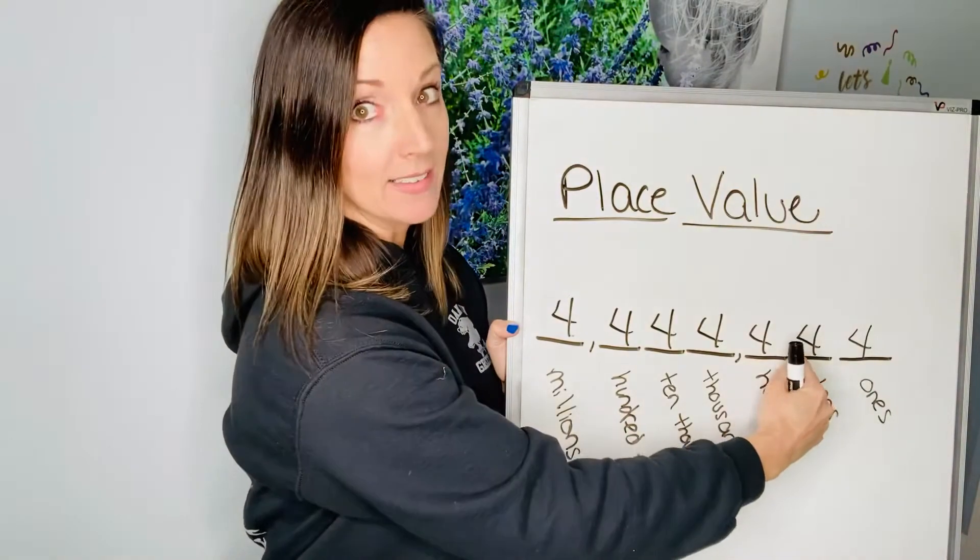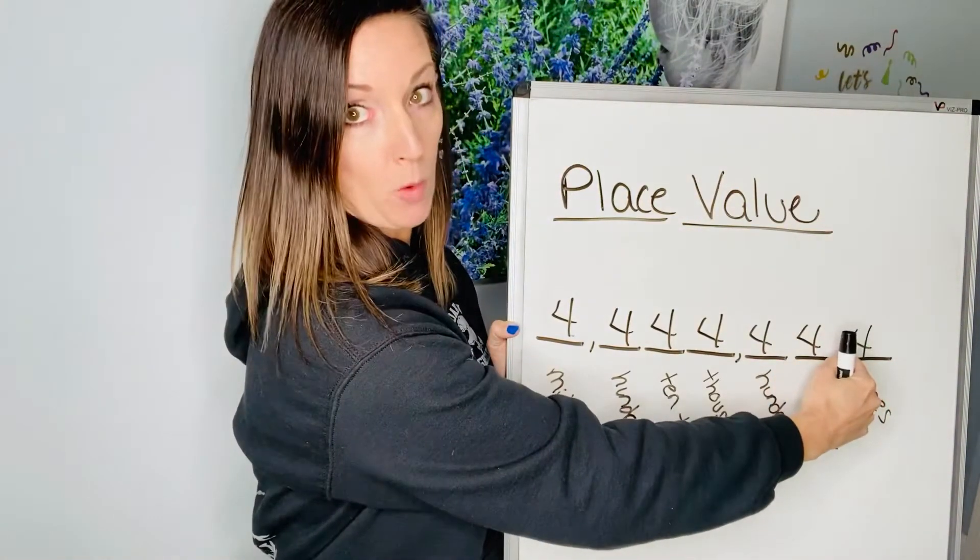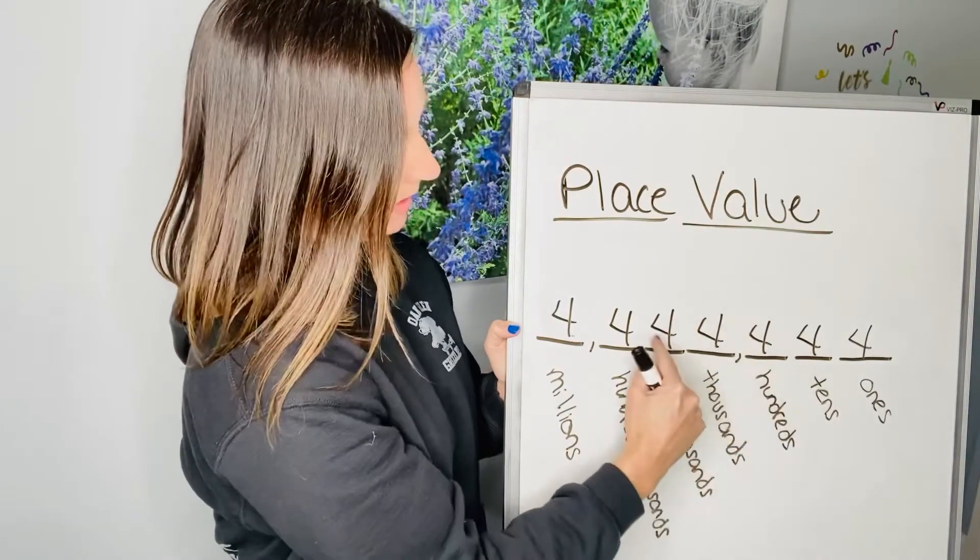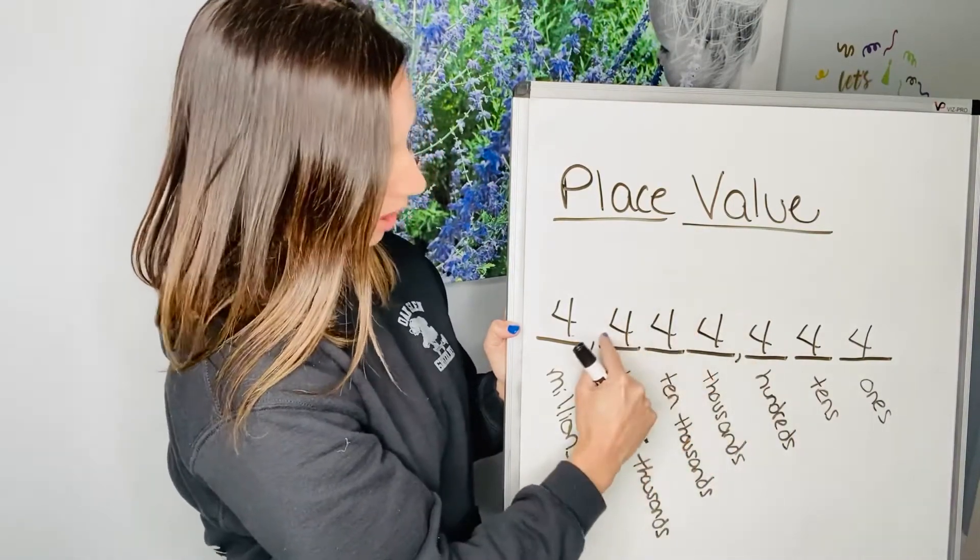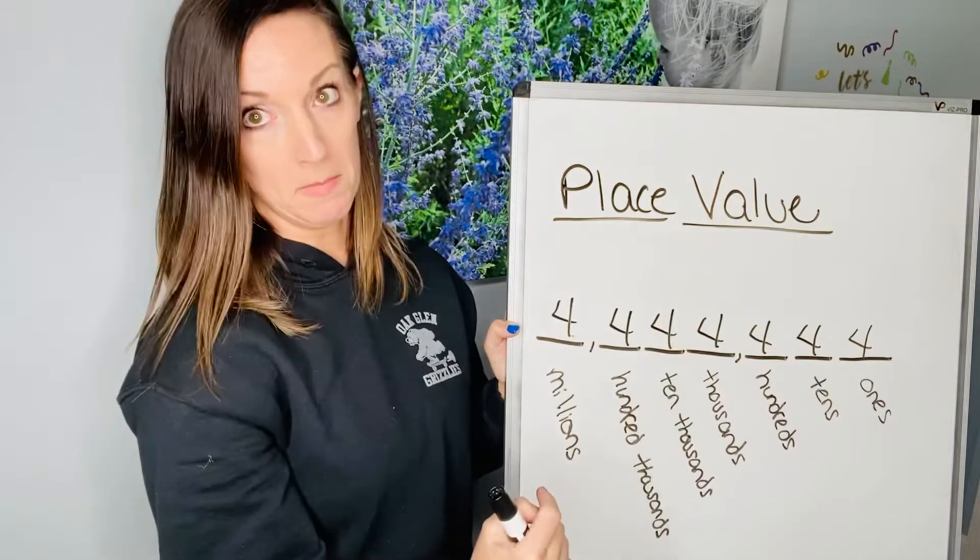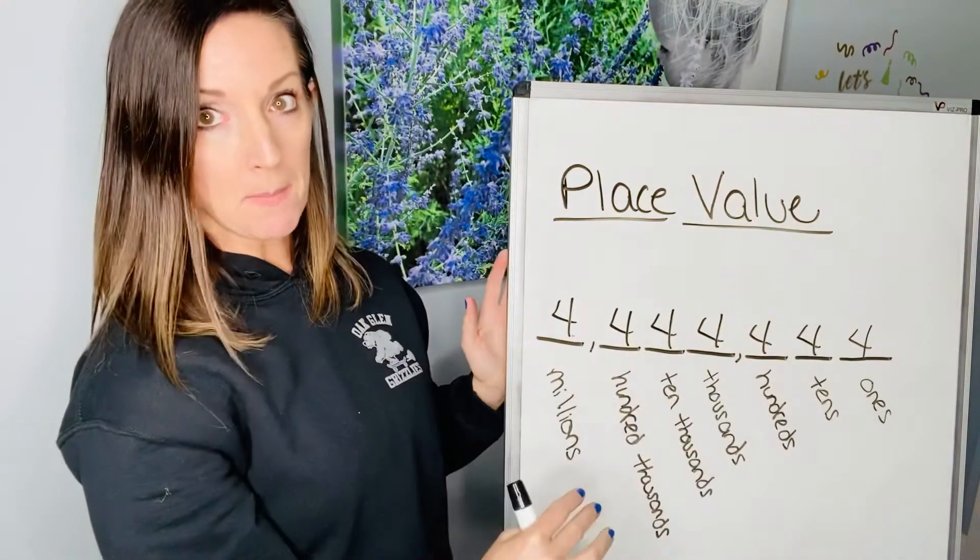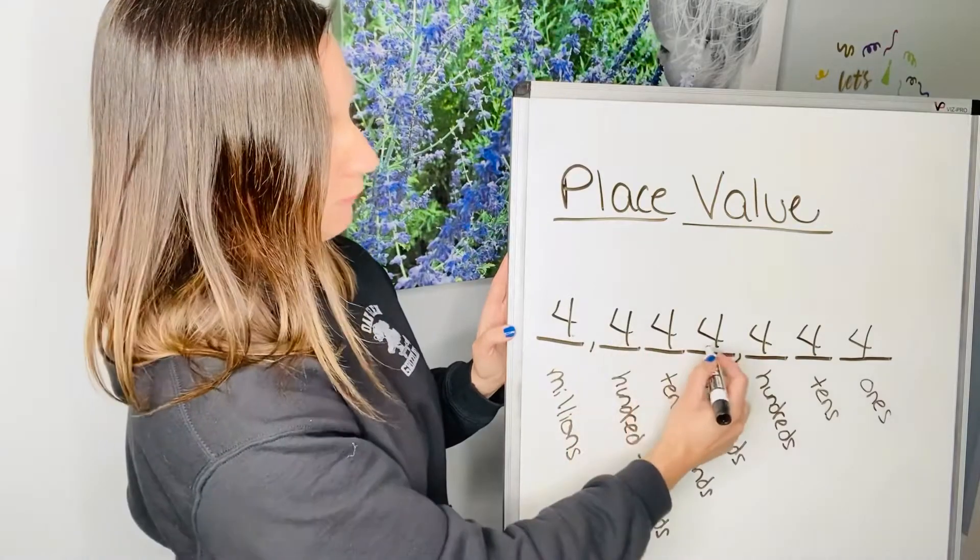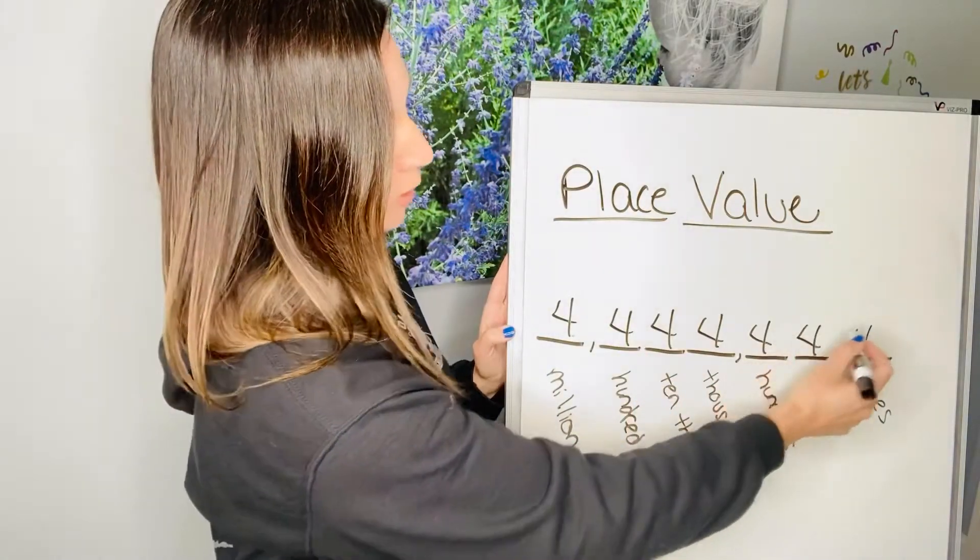Four tens is 40, bigger than four. Then we have four hundred, four thousand, forty thousand, four hundred thousand, and four million. So if you read this number, full number, it's four million, four hundred and forty-four thousand, four hundred forty-four.